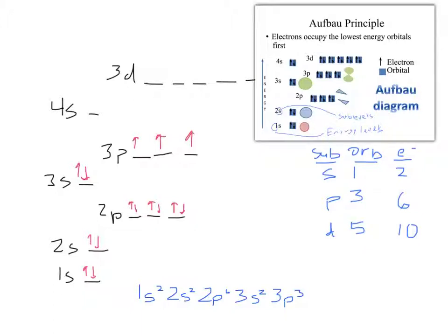Are the levels and sublevels always in this order? Yes, always in this order. No matter how many electrons there are, they always fill the 1S first, then 2S, then 2P, then 3S, then 3P, then 4S, then 3D, and so on and so forth.